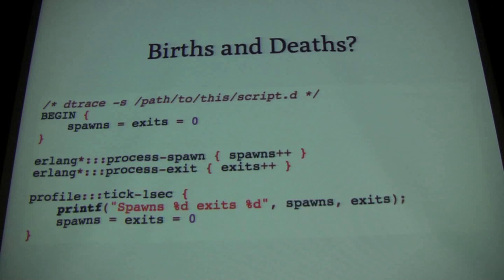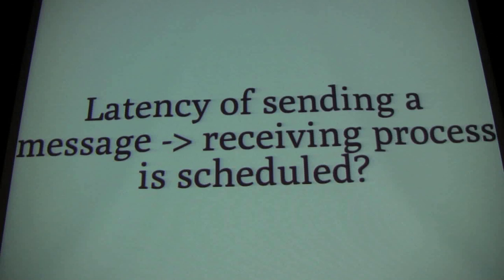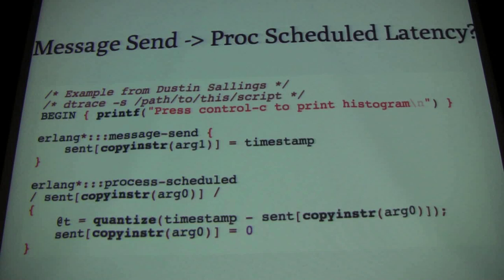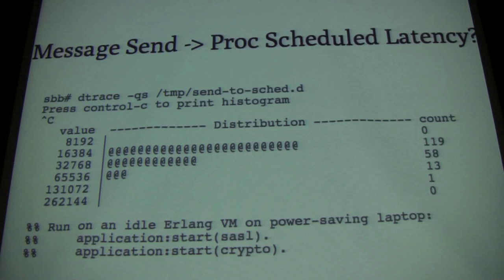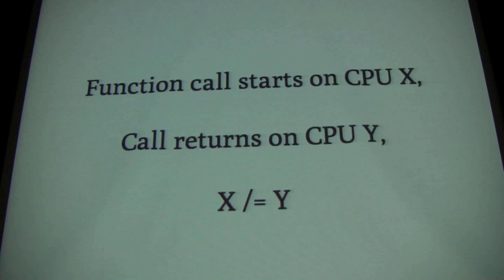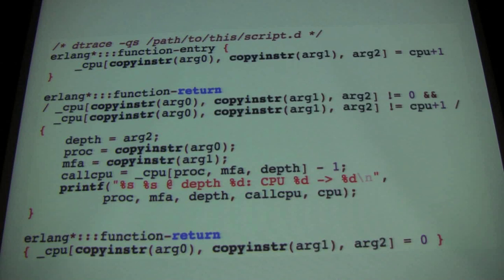Tracking births and deaths: with an instrumented build of the virtual machine, this script tells you every second how many processes were spawned and how many exited. Dustin came up with a script to measure the latency between sending a message and the receiver being scheduled to run — this kind of latency measurement is really easy to do in a short D script. You get a histogram like this; on a completely idle machine where power-saving messes with CPU frequencies, we're looking at around 16 microseconds of latency from the send to the receiver being scheduled. You can also look at Erlang function calls that start on one CPU and return on another — it's pretty straightforward in D — here's an example at the REPL shell that hopped from CPU 4 to 2 and then from 2 to 6, and this happens all the time within the virtual machine.